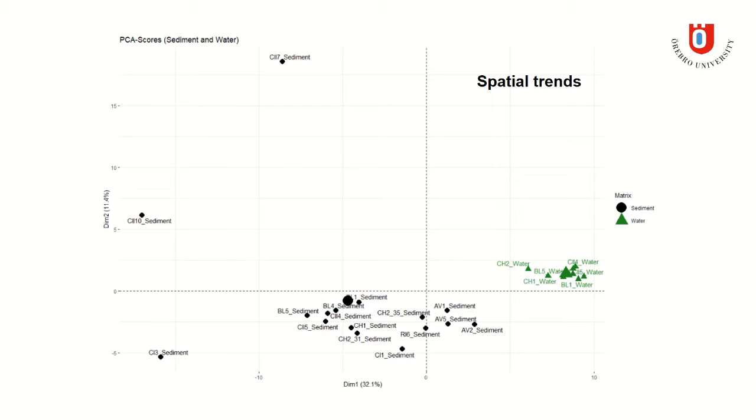If we now look at the water and sediment samples separately, as I said before, water clusters together as do the sediment samples. We do have a few outliers for the sediment samples, though. But we can look at spatial trends here. We have some samples collected in the inlet. And again, the inlet samples cluster together for the water and sediment. And the same goes for open water samples and also for coastal water samples.